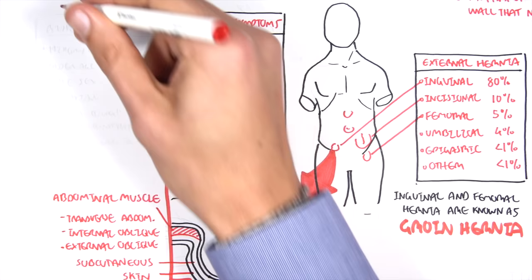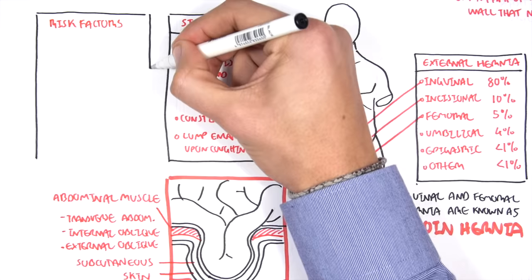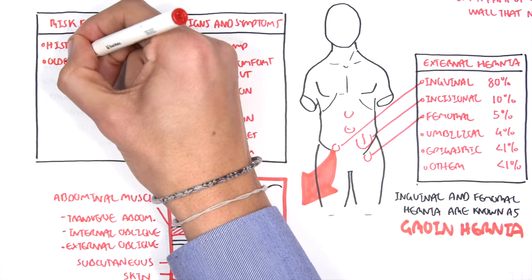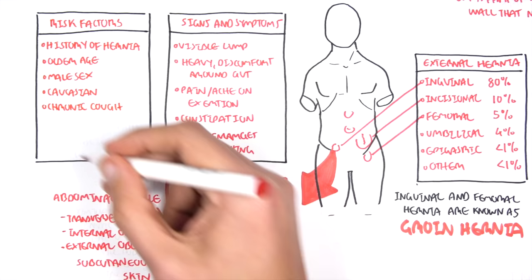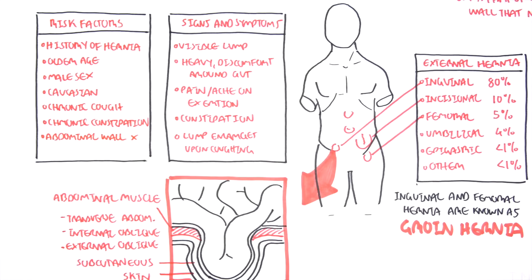Risk factors for developing an inguinal hernia include a history of hernia, older age, male sex, being Caucasian, having a chronic cough, chronic constipation, a weak abdominal wall, and smoking.